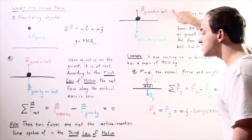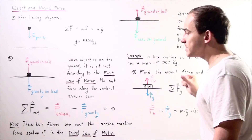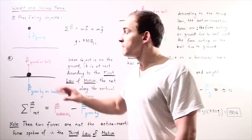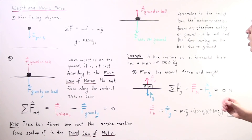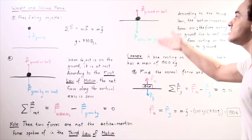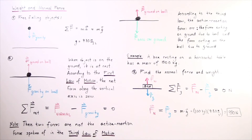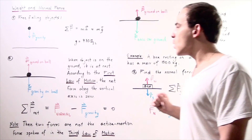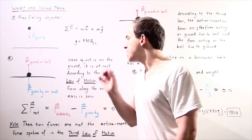According to Newton's third law, the ball creates a force on the ground — object number two — pointing in the downward direction, opposite to the normal force. These two forces are the true action-reaction pair spoken of in Newton's third law. They act on different objects: one on the ball, one on the ground. The normal force and weight, by contrast, both act on the same object and are not an action-reaction pair.